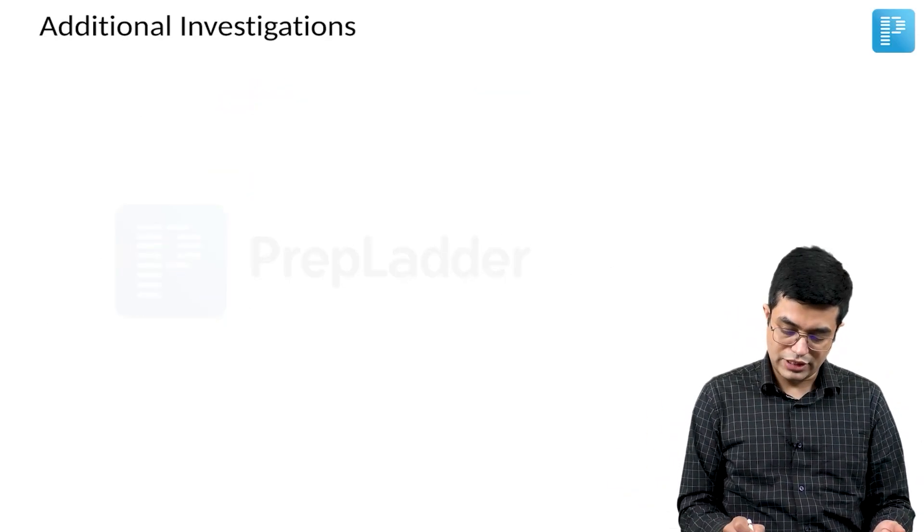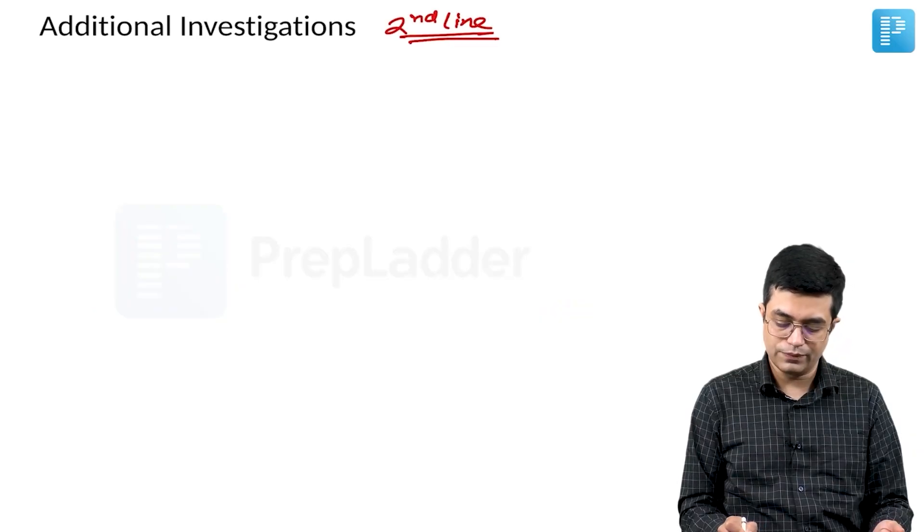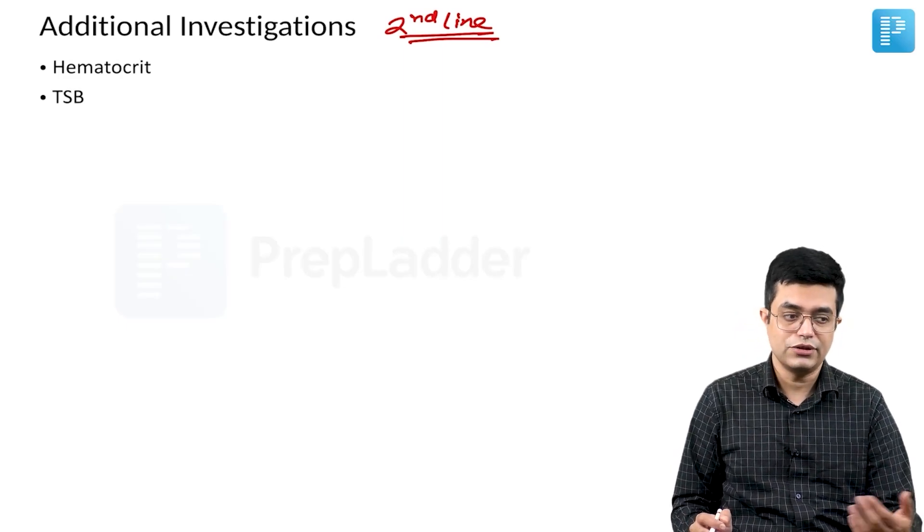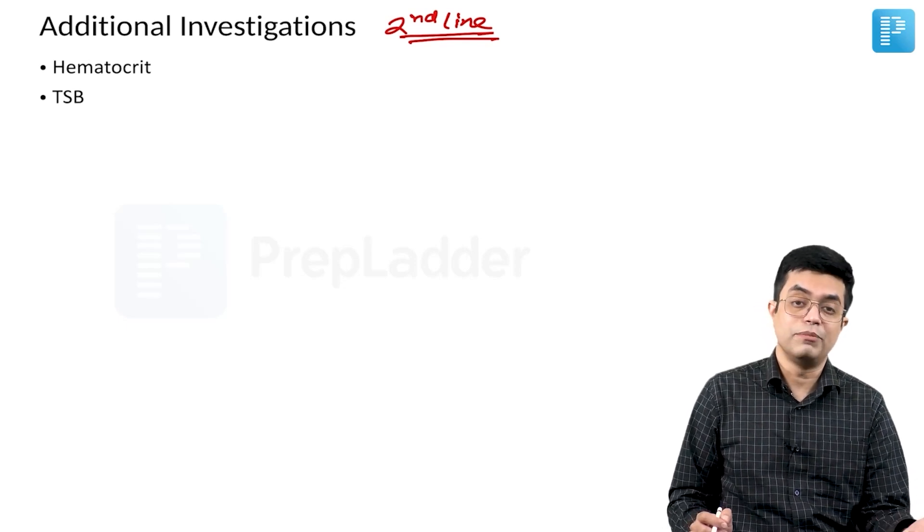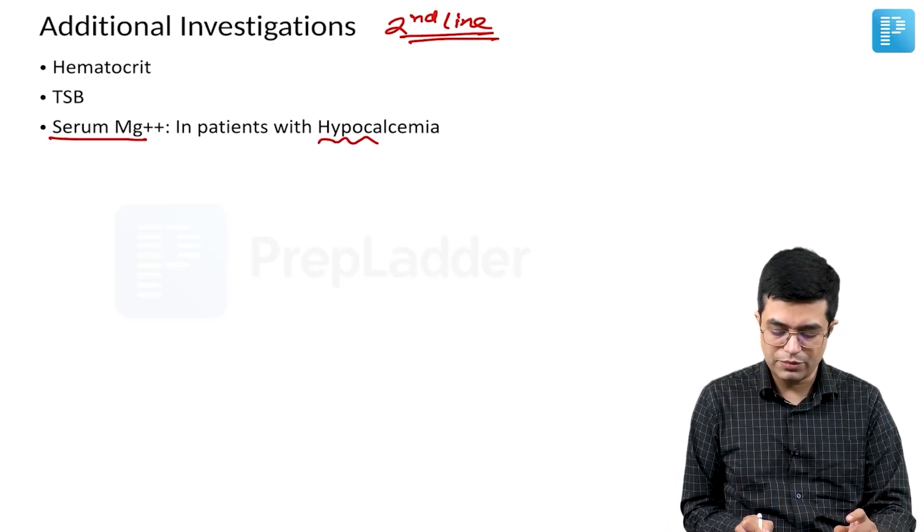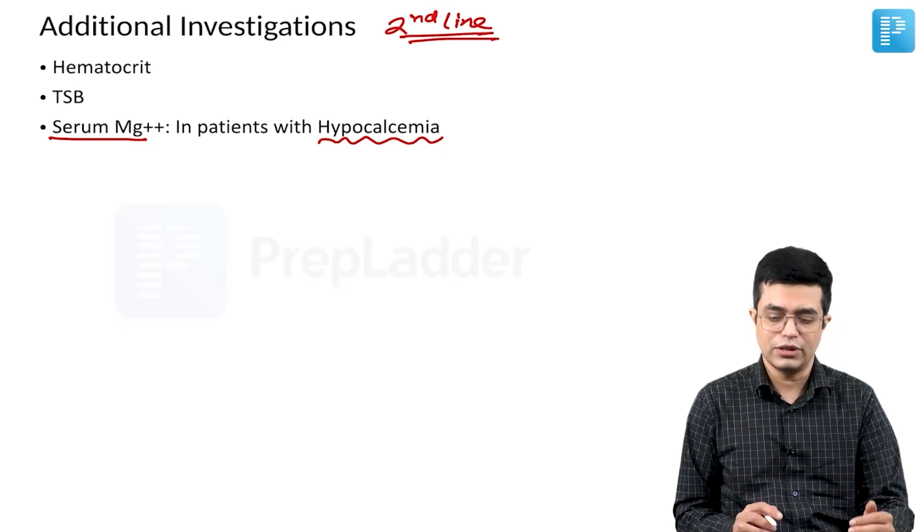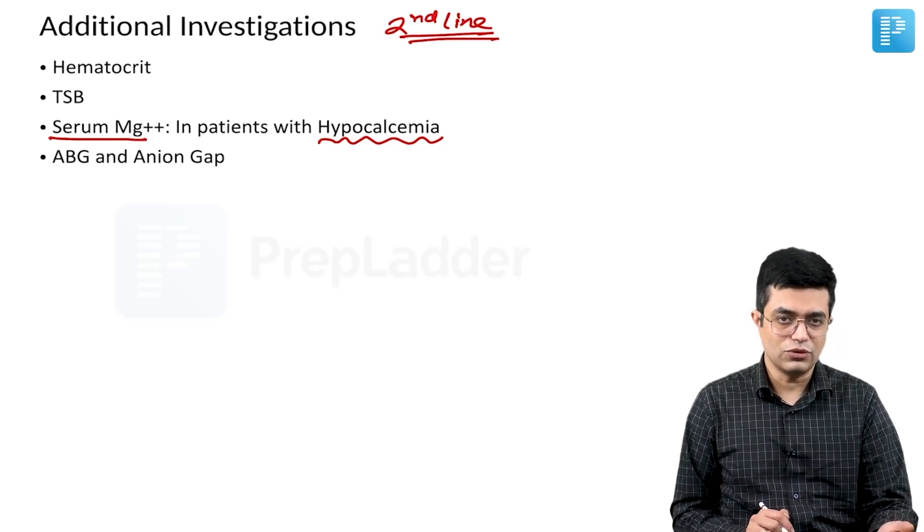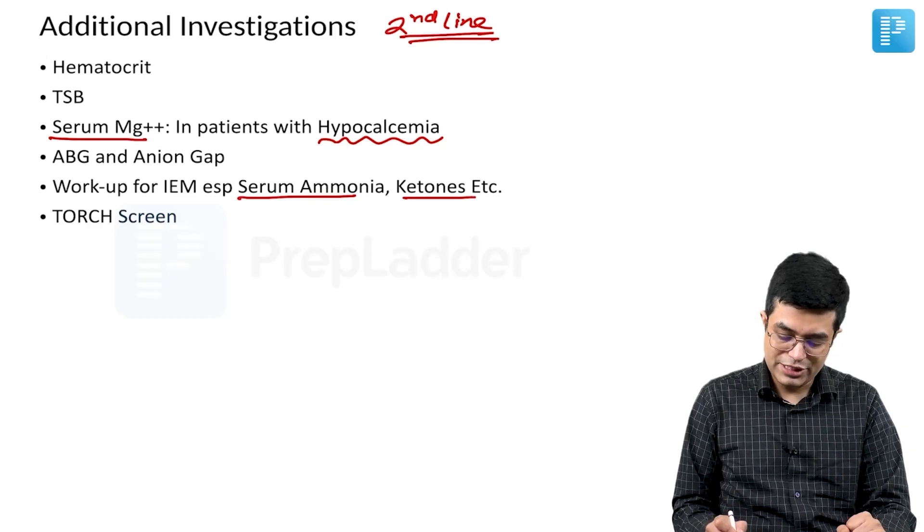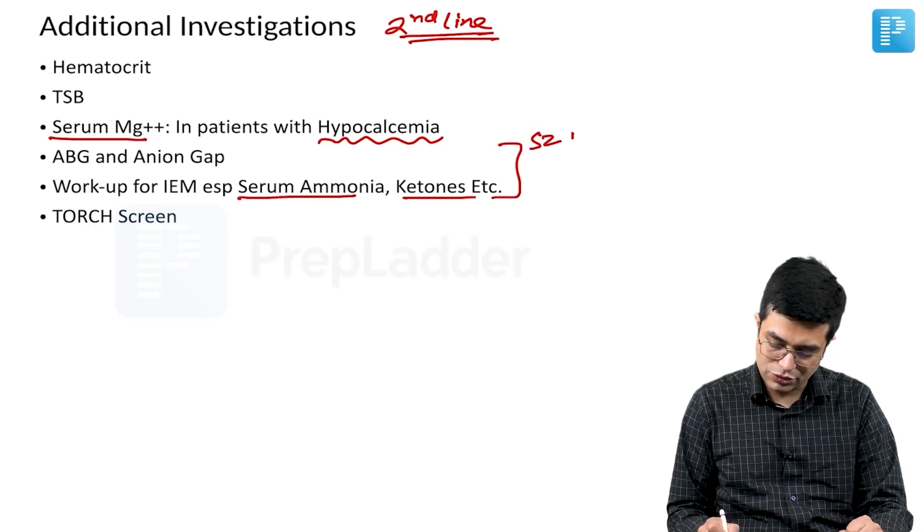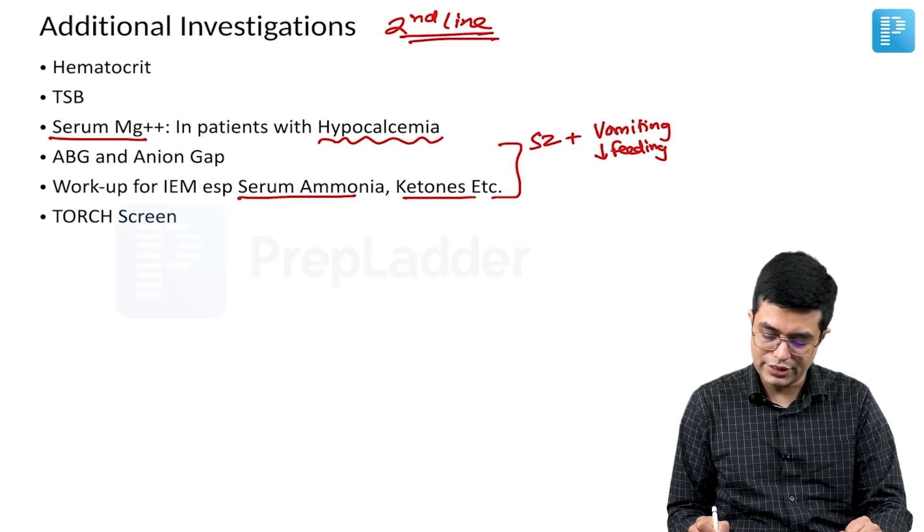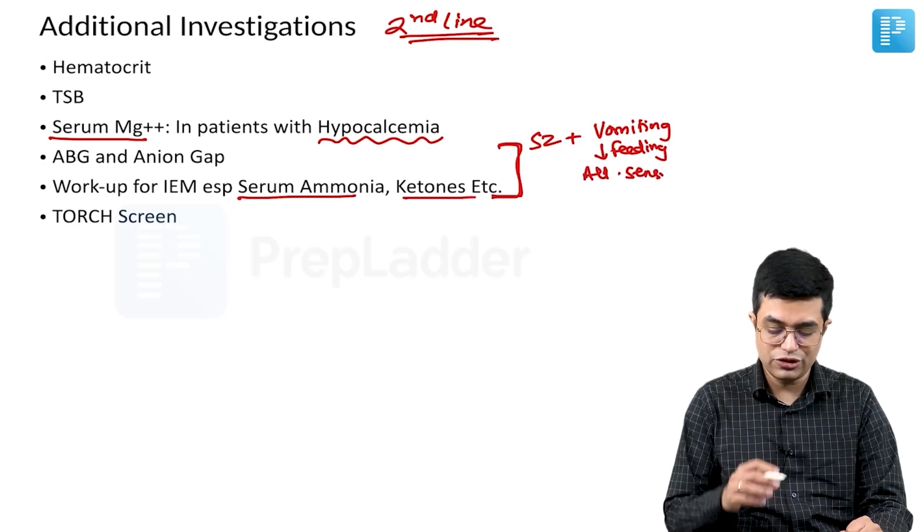And then what are the additional investigations also called as second line investigations that you will do. You will do a hematocrit in case you are suspecting polycythemia. You will do a total serum bilirubin in case you find that unconjugated hyperbilirubinemia related acute bilirubin encephalopathy is the likely reason. Serum magnesium levels will be needed. It is a secondary investigation and usually performed in patients with hypocalcemia because hypocalcemia, hypomagnesemia tend to occur together. Then ABG and anion gap will tell you the presence of acidosis or not and workup for IEM will be needed especially serum ammonia and urine ketones you will watch out for. This ABG and anion gap and workup for IEM will be needed when the seizures are associated with clinical syndrome like vomiting, poor feeding and altered sensorium.